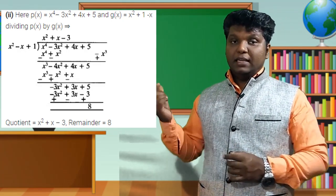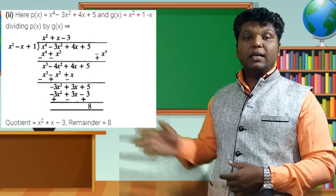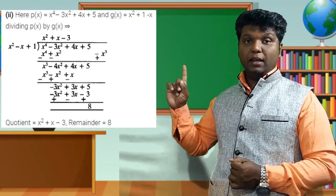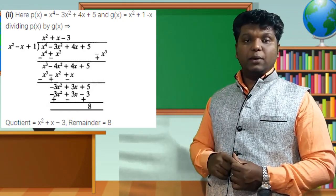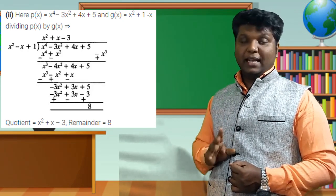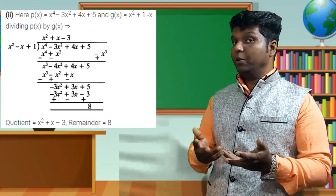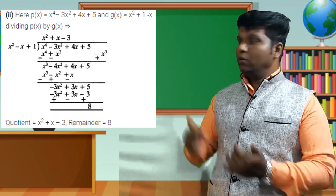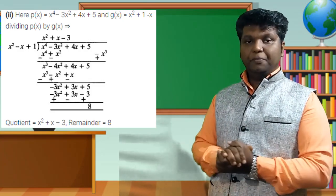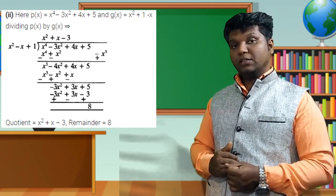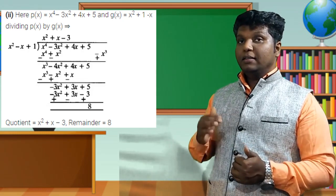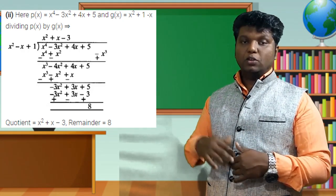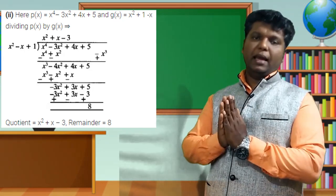Start dividing: x⁴ ÷ x² = x². Place x² in the quotient. Multiply x² by the divisor: x² × x² = x⁴, x² × (−x) = −x³, x² × 1 = x². Write x⁴ − x³ + x² below. Subtract: x⁴ − x⁴ = 0; 0x³ − (−x³) = +x³; −3x² − x² = −4x²; bring down +4x.